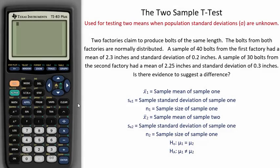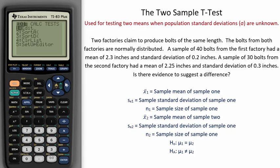The two-sample t-test is used for testing two means when population standard deviations are unknown. To find it on the TI calculator, go to STAT, over to TESTS, and then down to two-sample t-test.